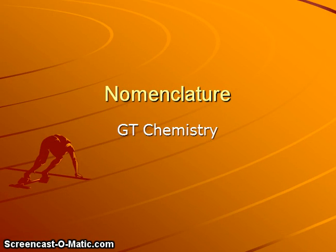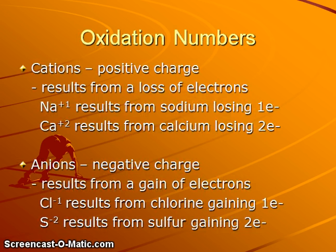Hi everybody. This presentation will cover basic nomenclature for ionic and covalent compounds. For ionic compounds, it's important that we be able to determine the oxidation number or the charge that elements will form as they are ionized.